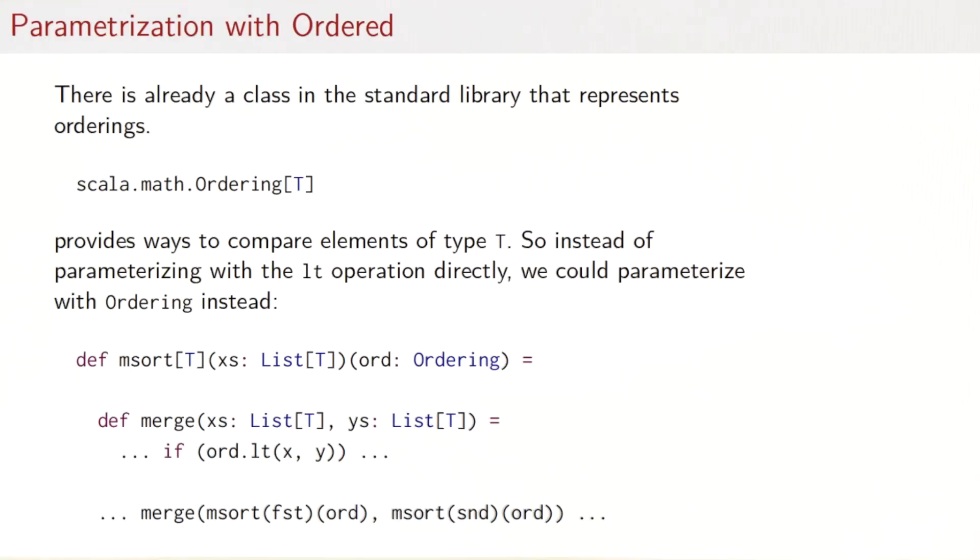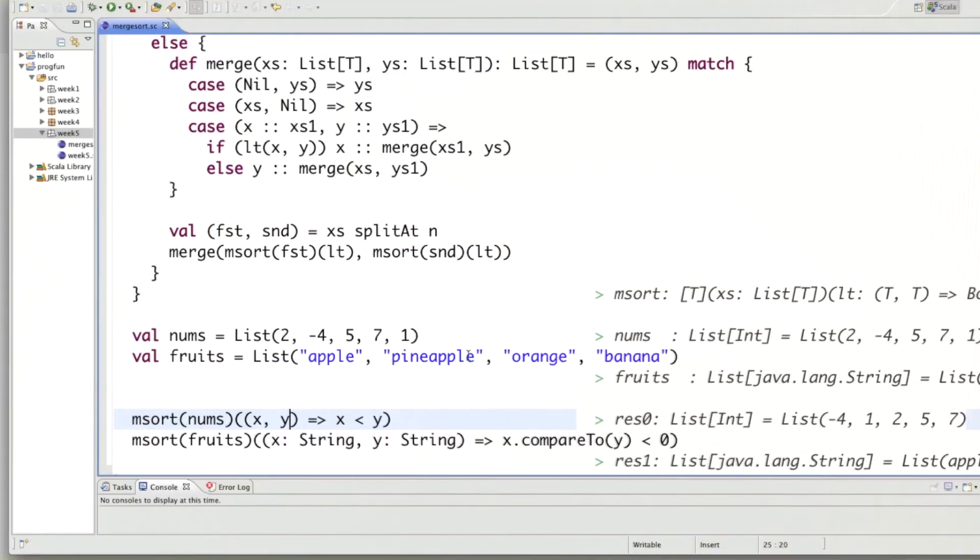So so far we have parameterized the merge sort function with our own less than operation, which is perfectly possible. But on the other hand, we could also use a predefined class. There is already a class in the standard library that represents orderings with less than function, but also all the other ordering functions like greater than, less than, or equal, and so on. That class is called Scala.math.ordering of t. So the type parameter t tells us what's the type of the elements that are compared in the ordering class. Instead of parameterizing with the less than function directly, we could also parameterize m sort with ordering instead. So it wouldn't be much that we had to change.